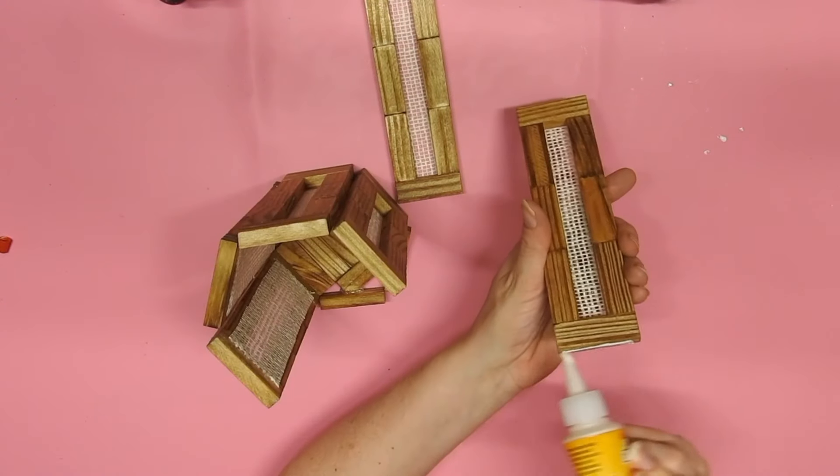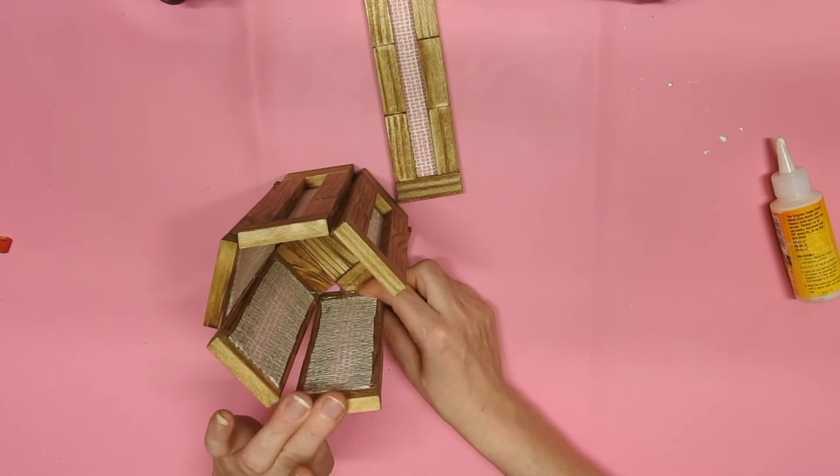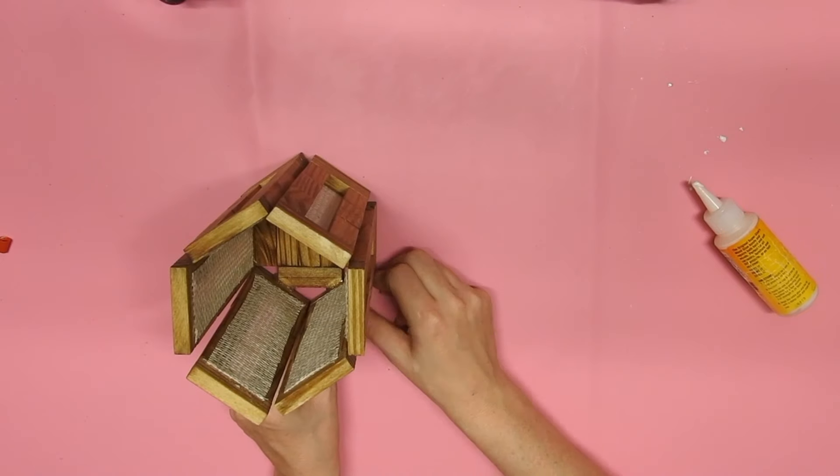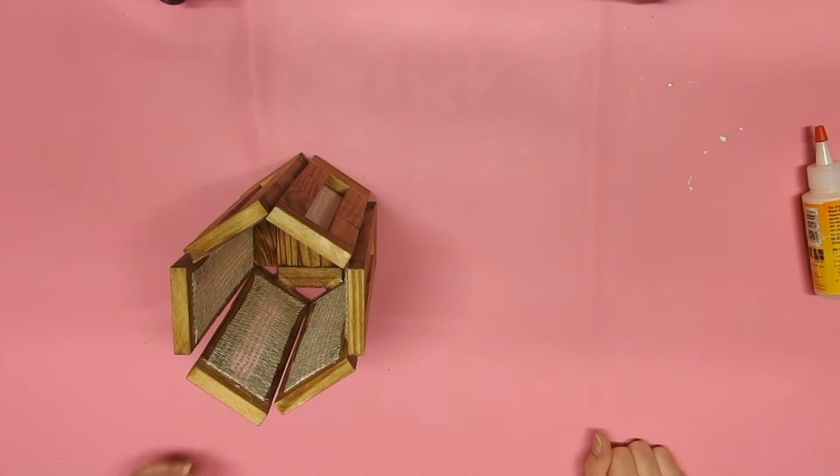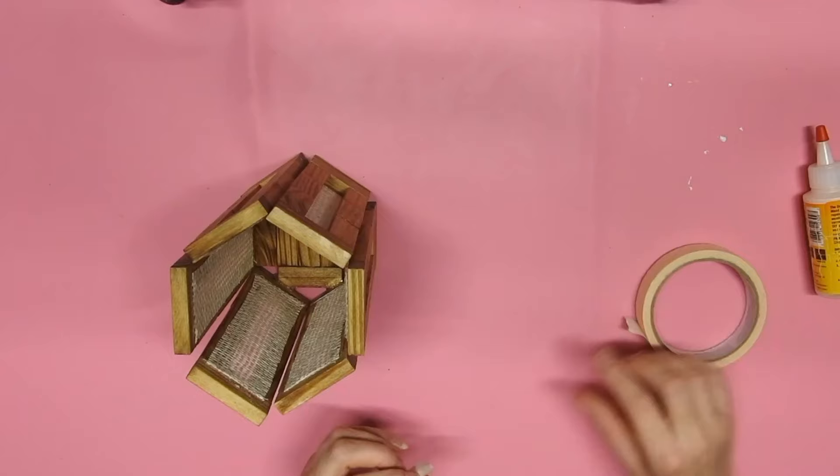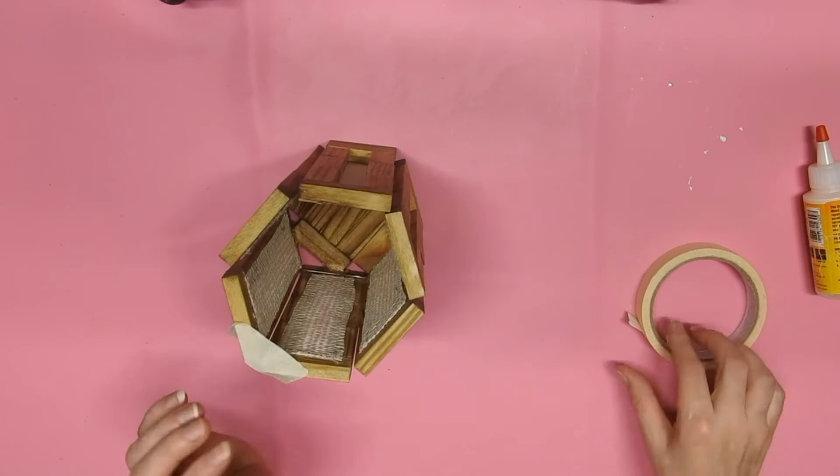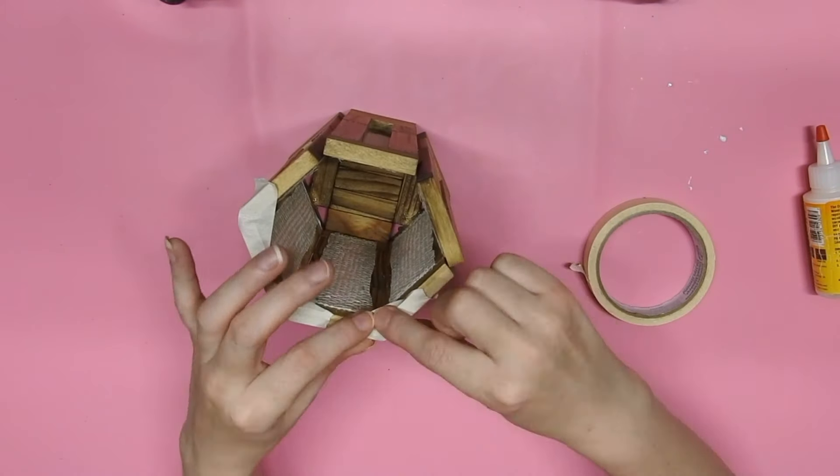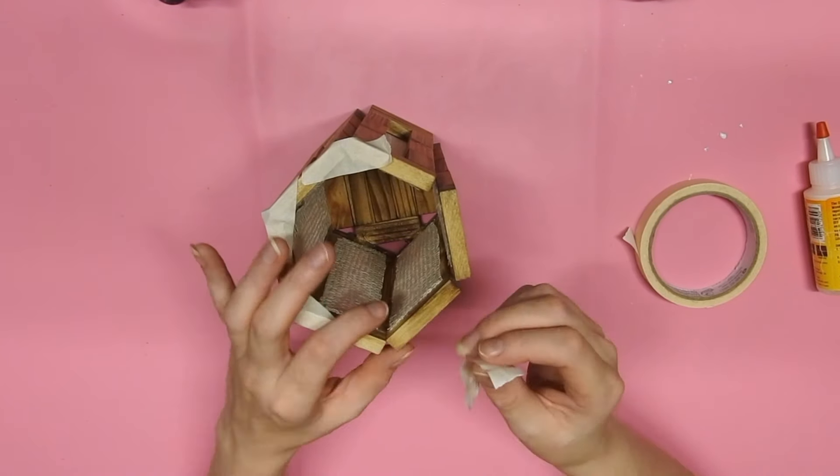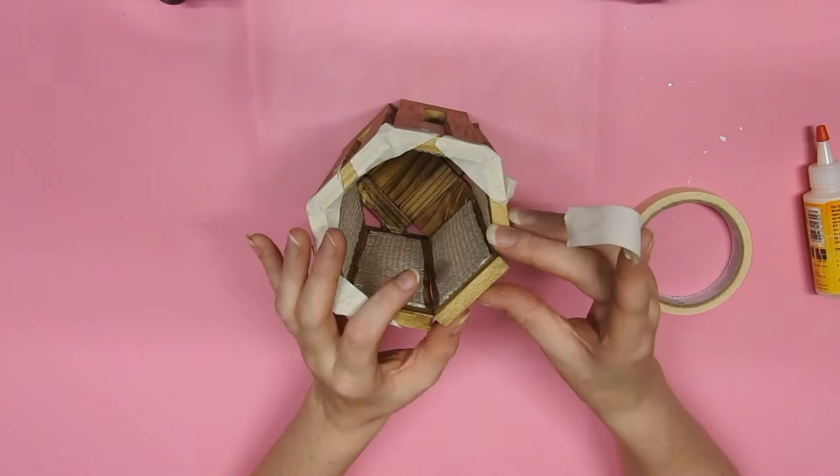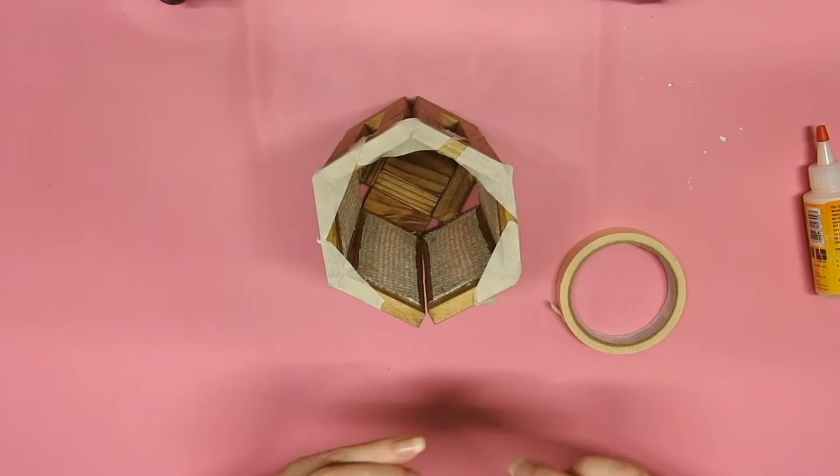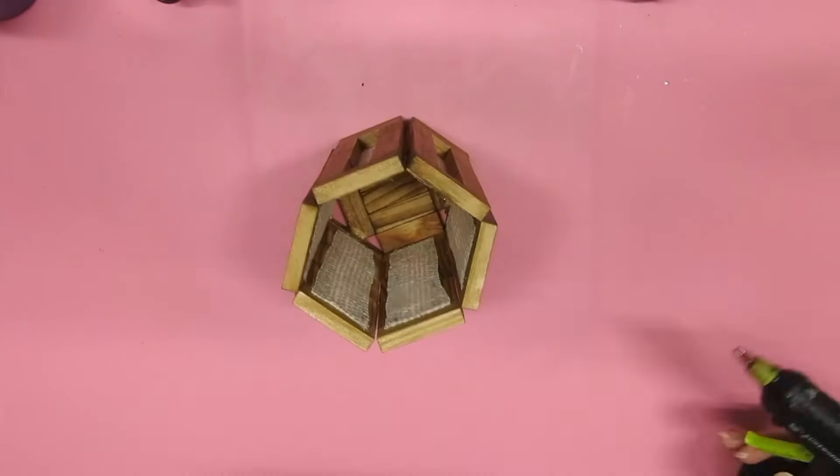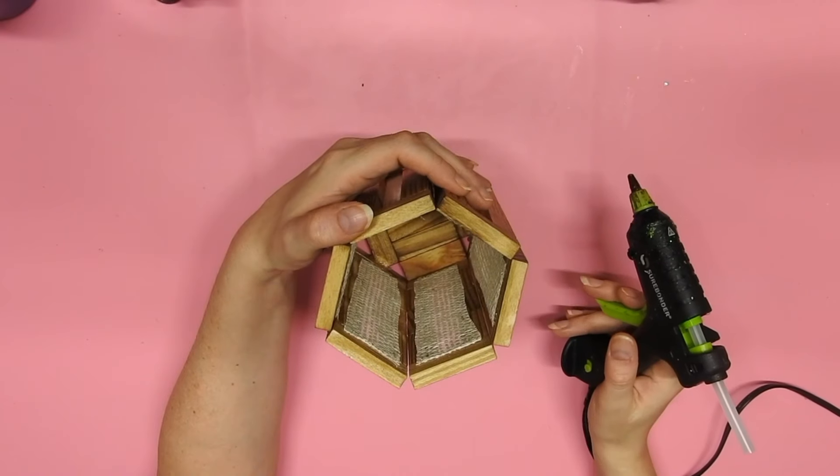So yeah you could just glue those pieces on at the start and then I'm just going to tape the tops so that the glue sets the pieces in the right place. And once the glue was dry I just reinforced each corner with some hot glue.